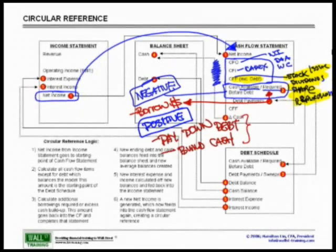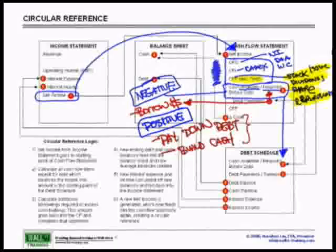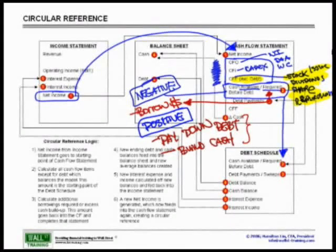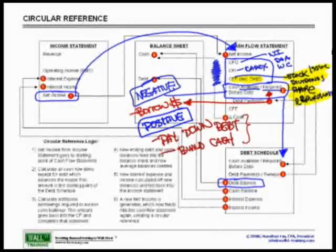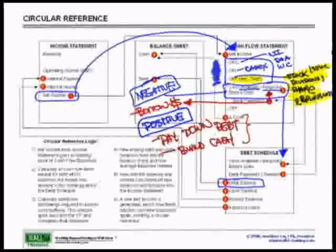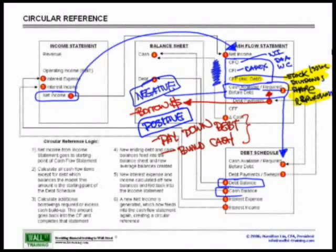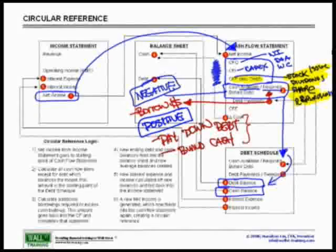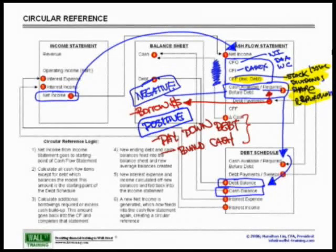Once you do that, you now arrive at your cash requirement or cash availability before debt payments, which then flows into your debt sweeps. This now flows into your debt suite to calculate exactly if you need to borrow or if you can pay down your debt, which will arrive at a brand new debt balance. Any excess of cash that has been built throughout the time period, whether quarterly or annual model, will also affect your brand new cash balance. Once you have calculated your debt sweeps and your debt payments, you will now calculate your brand new ending balances, which will now calculate in turn your interest expense and interest income.